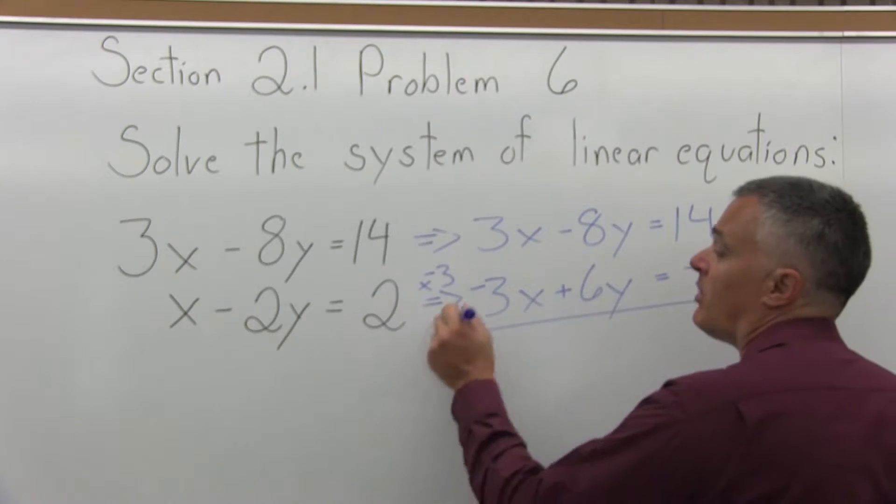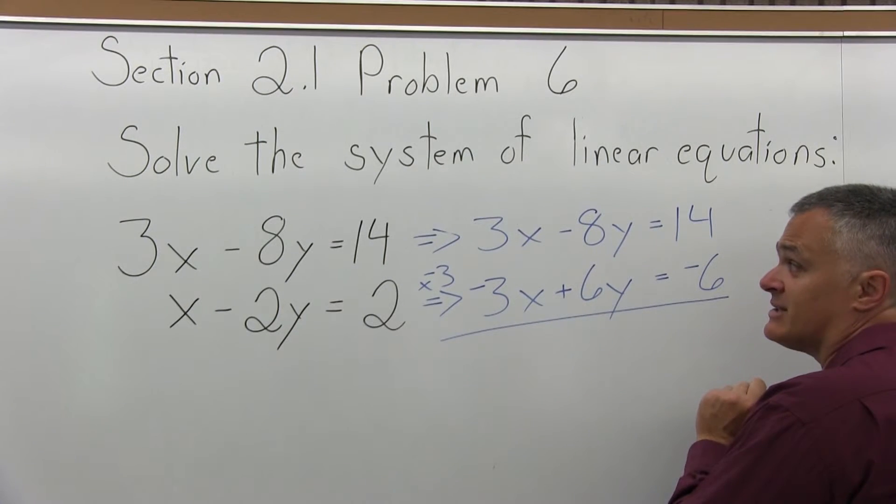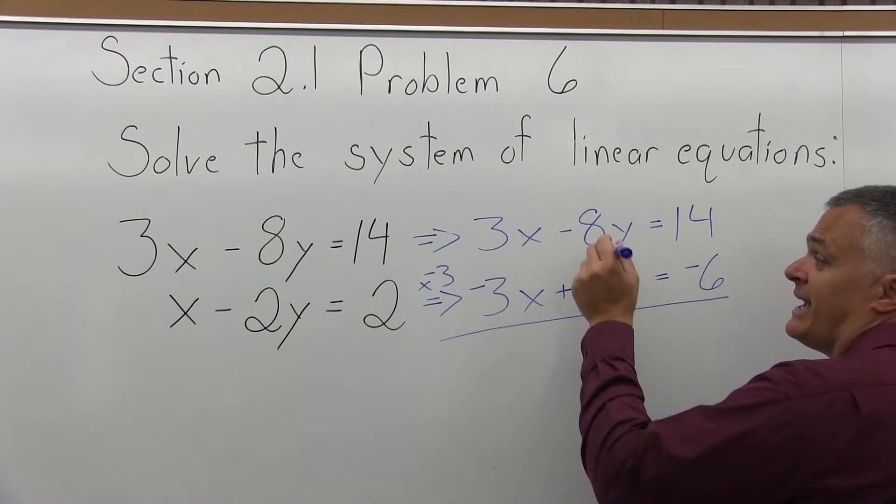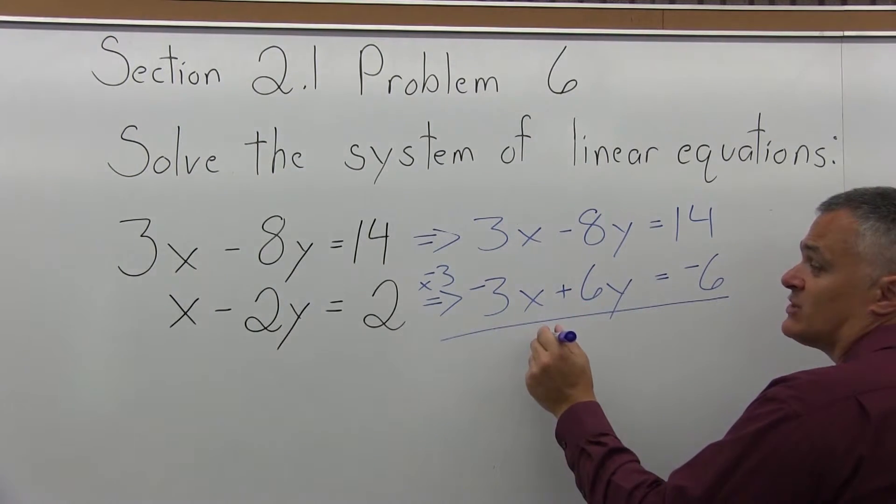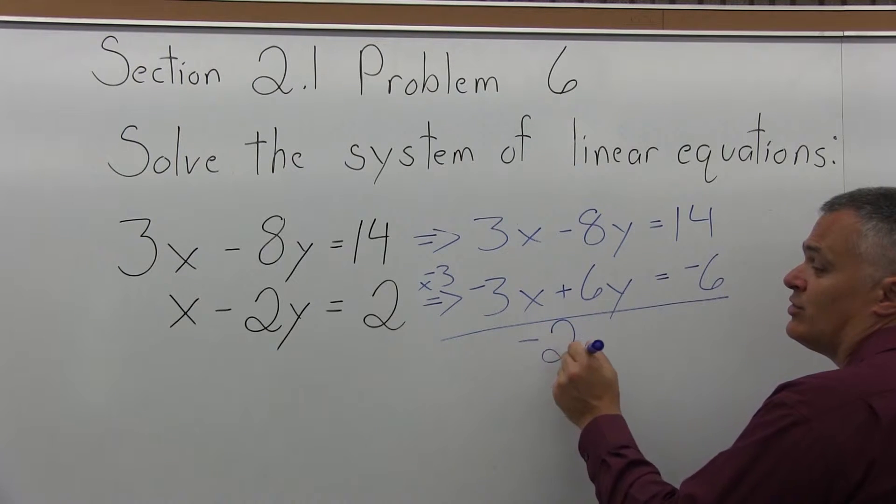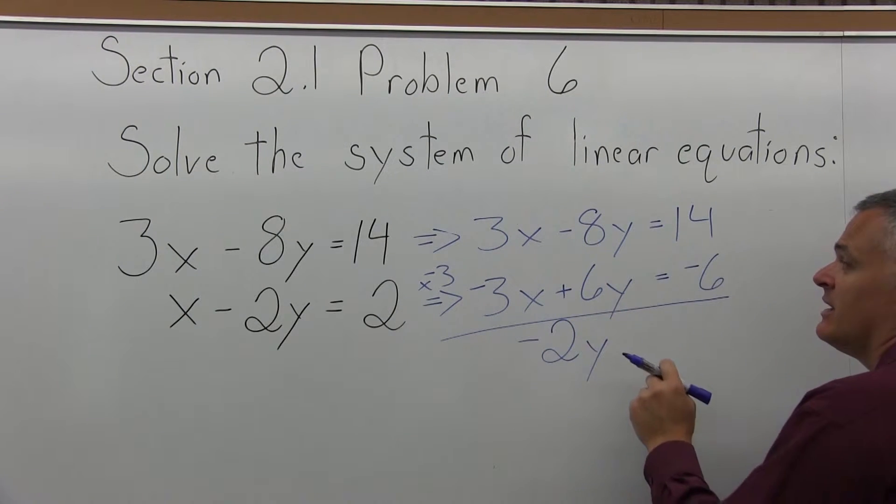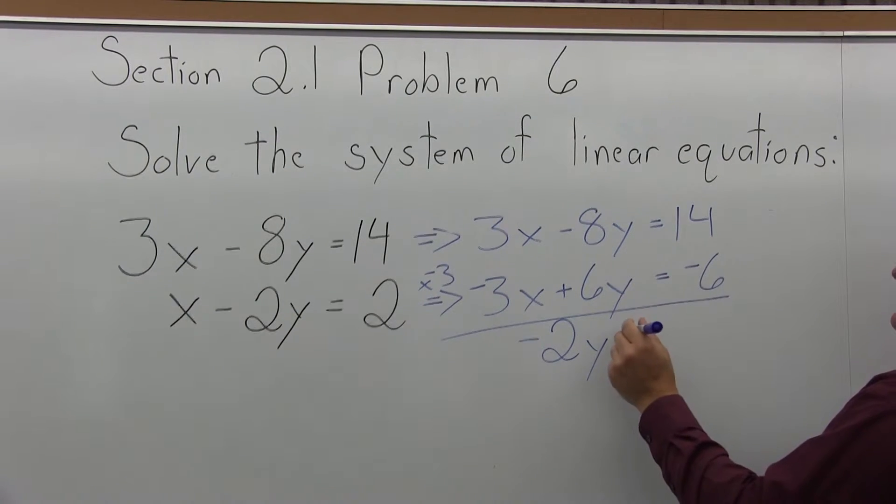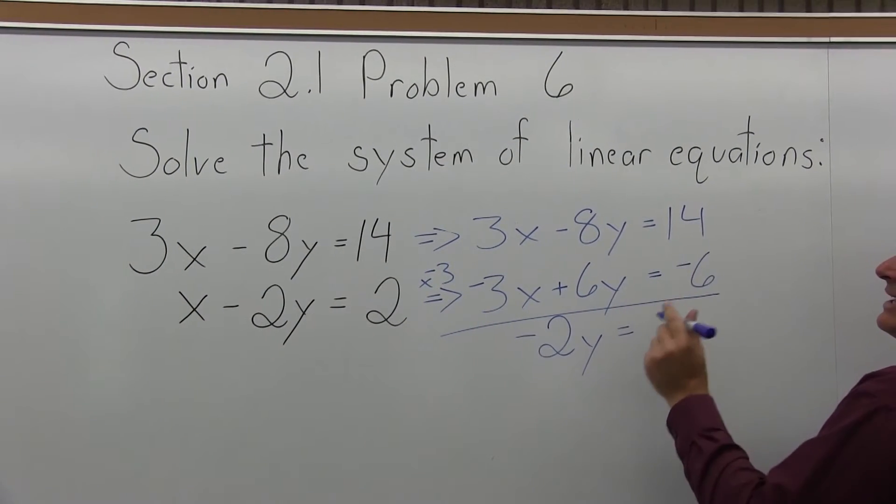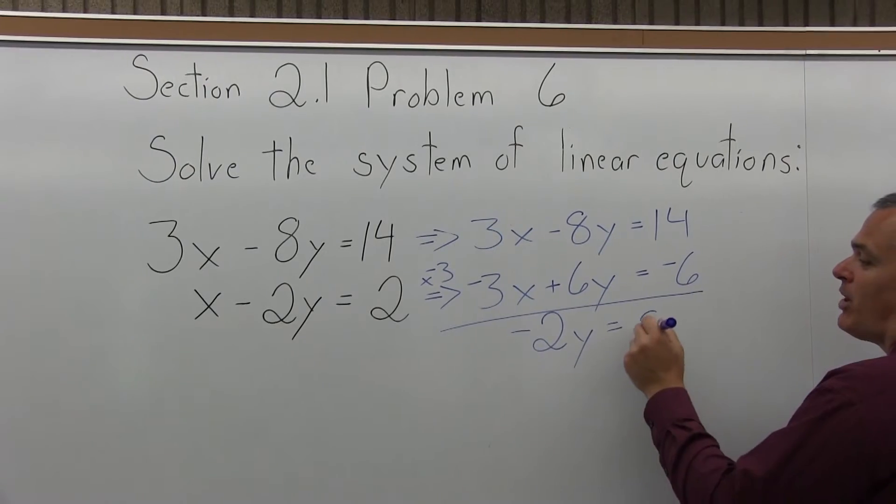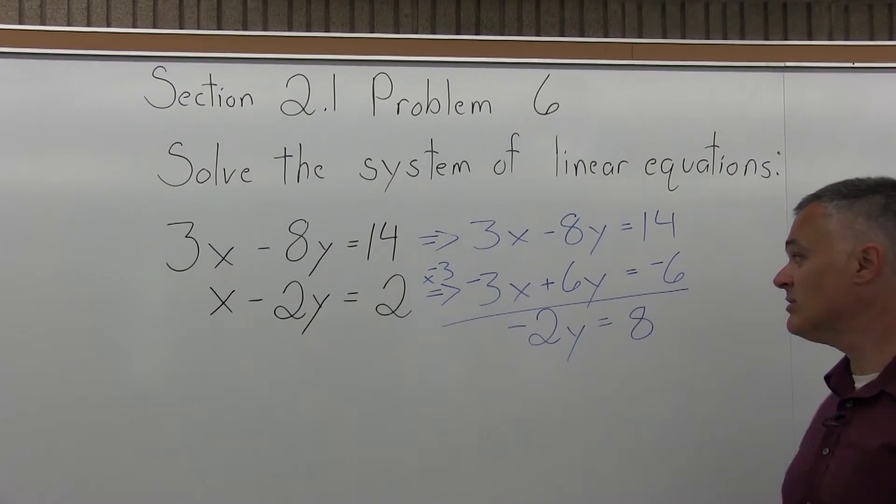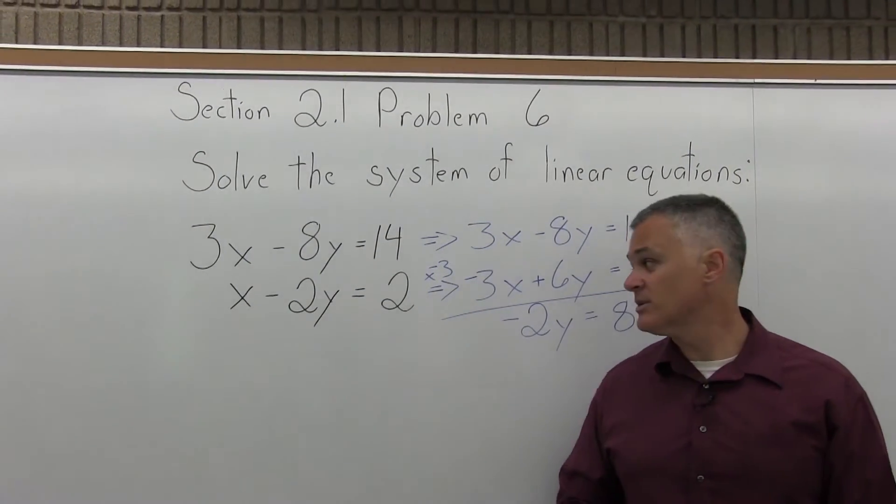When I do, positive 3x, negative 3x cancels. Negative 8y and positive 6y will be negative 2y. Again, pay attention to the negative. And, equals positive 14 and negative 6 will be positive 8. So, that's step two. I added the equations together and canceled one of the variables.